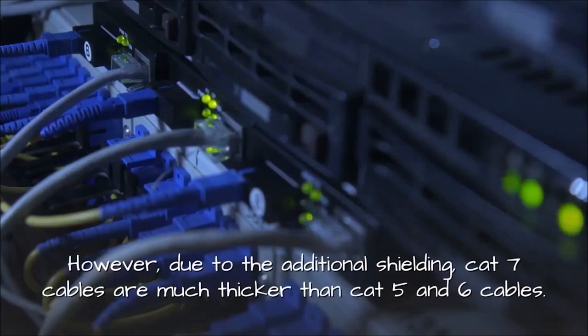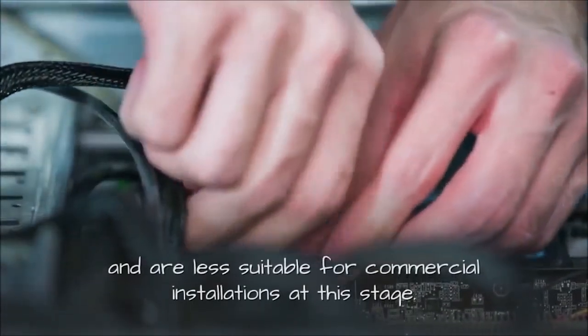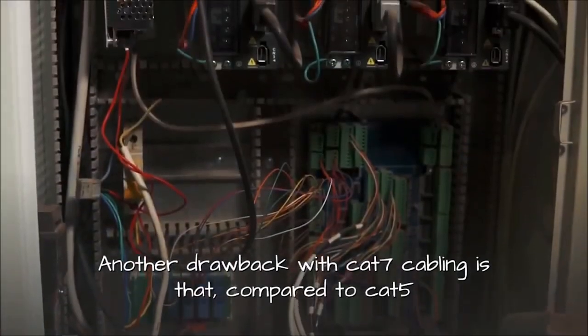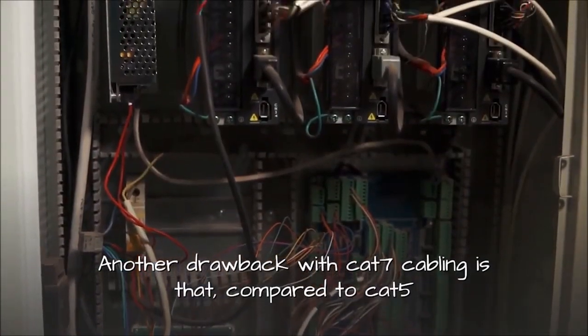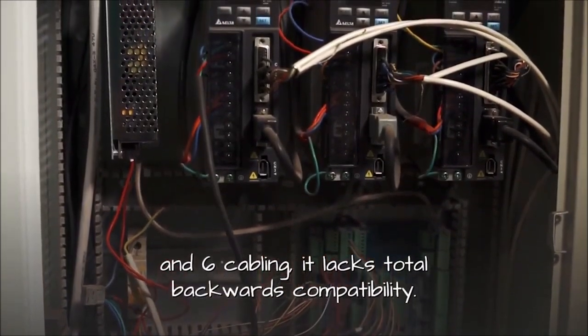However, due to the additional shielding, CAT7e cables are much thicker than CAT5e and 6e cables. In this situation, they have reduced flexibility and are less suitable for commercial installations at this stage. Another drawback with CAT7e cabling is that, compared to CAT5e and 6e cabling, it lacks total backwards compatibility.